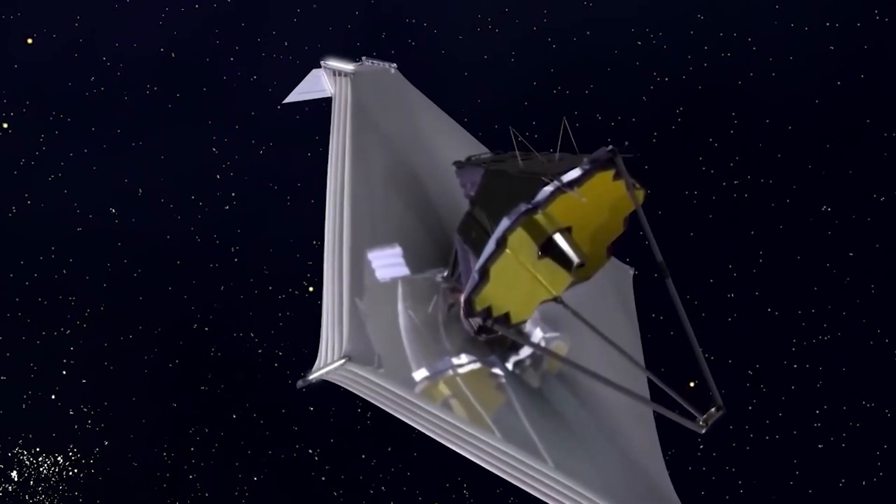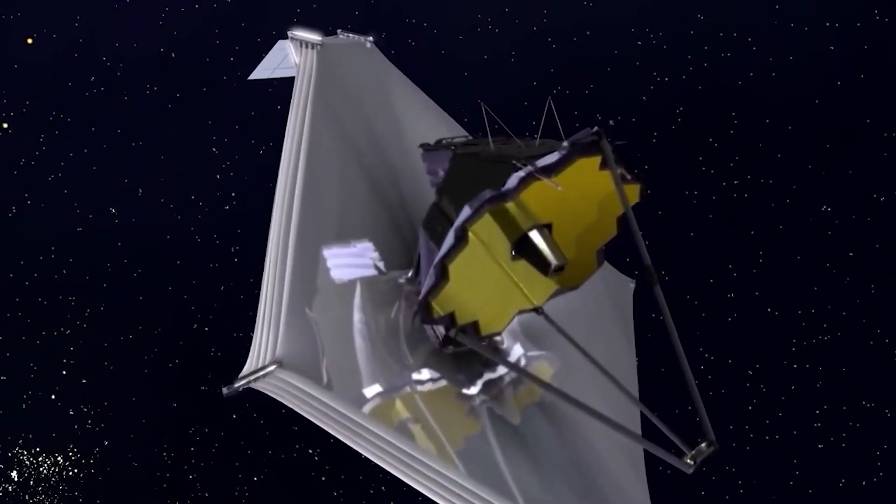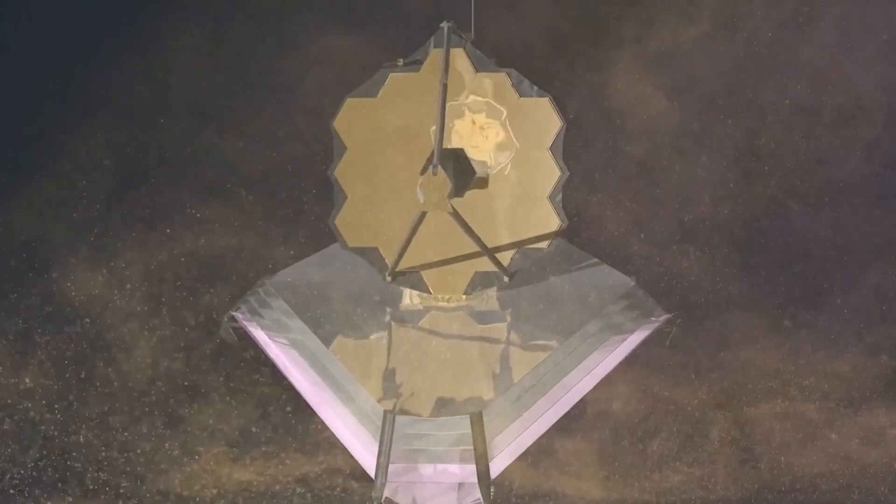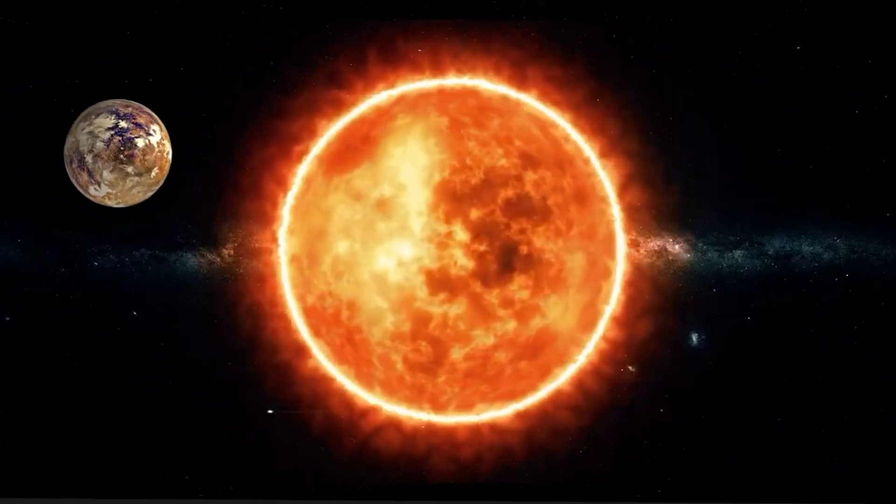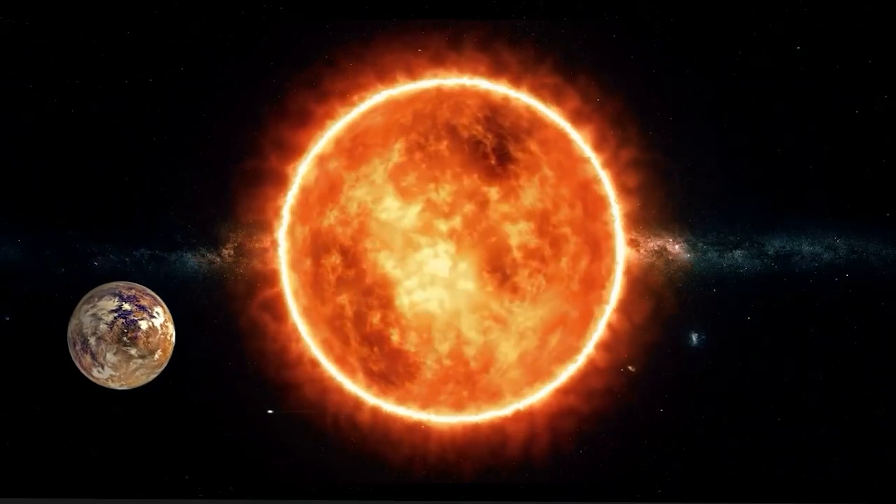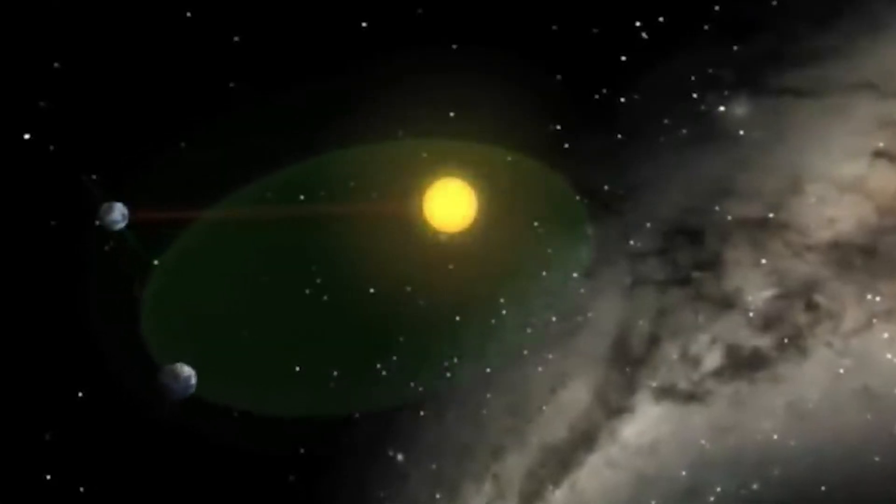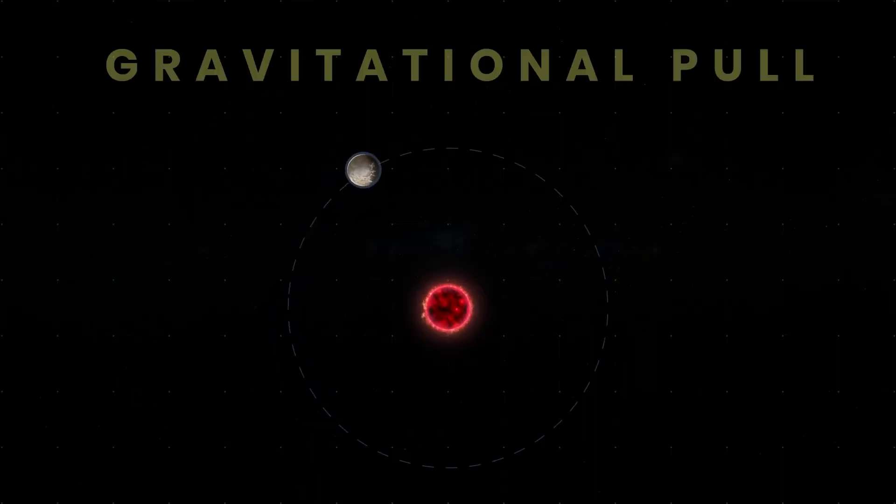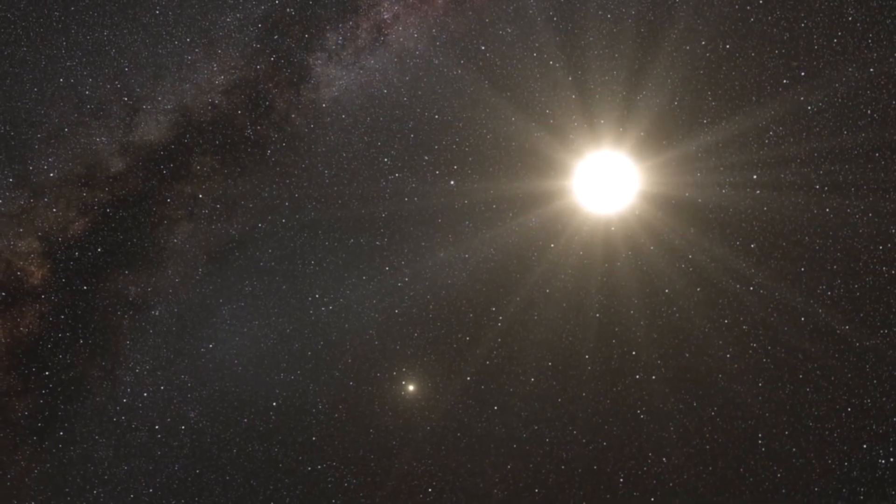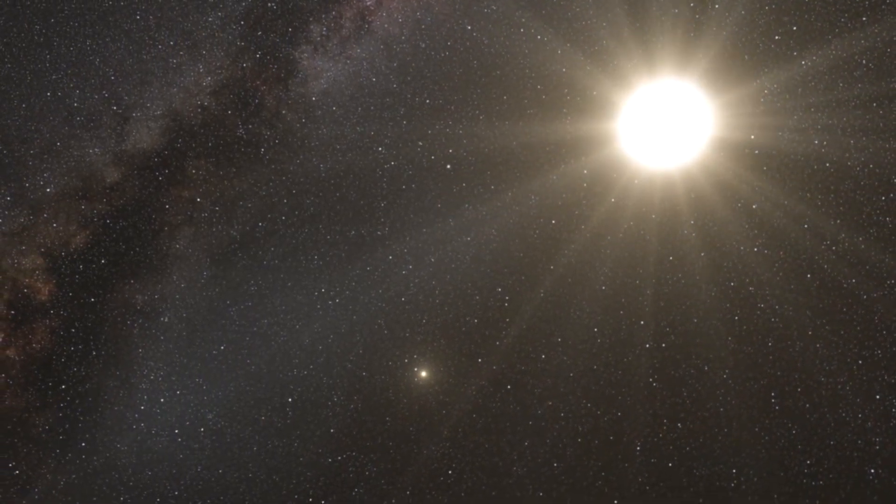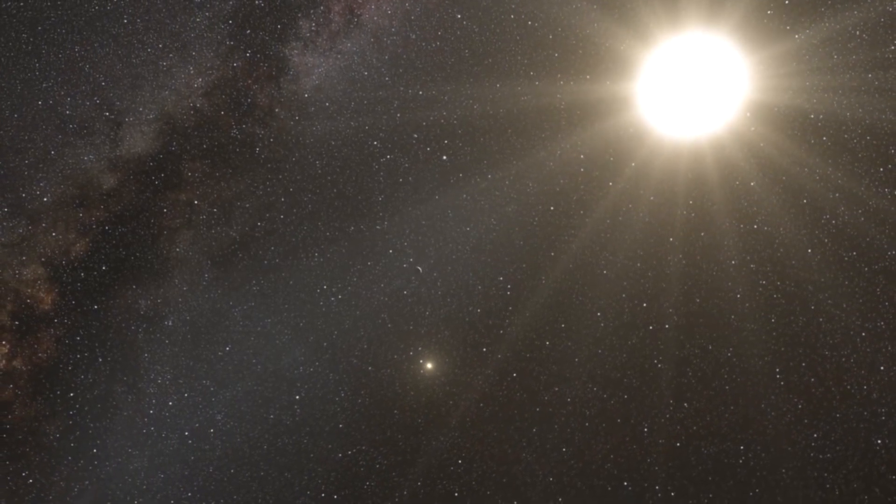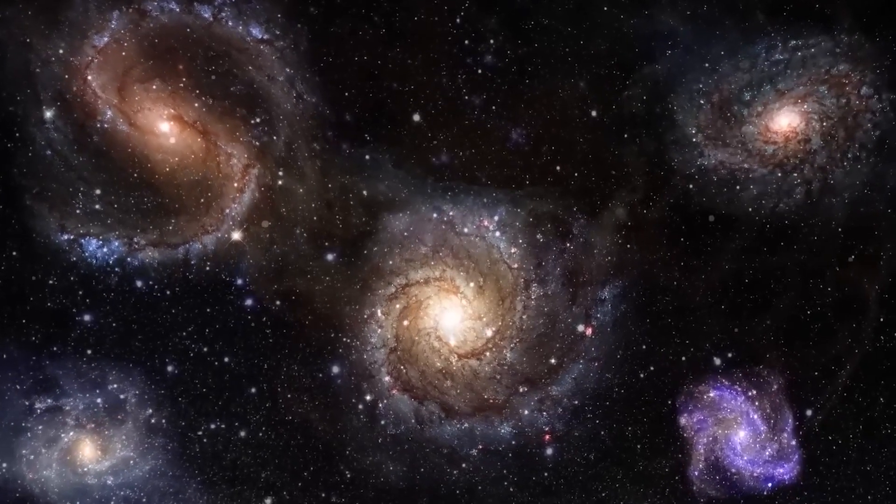In conclusion, the James Webb Space Telescope has finally delivered on its promise of providing groundbreaking discoveries in the field of astronomy. The new detailed image of Proxima b is just the beginning of what the JWST is capable of, and we can expect many more exciting discoveries in the years to come. So what do you expect out of this exoplanet? What if there is already life on Proxima b? Do let us know your thoughts in the comment section below. If you enjoyed this video, please hit that thumbs up. It will help us to understand our audience and allows YouTube to suggest similar videos to you. Thanks for watching and we hope to see you at the next one.